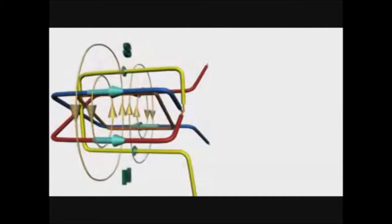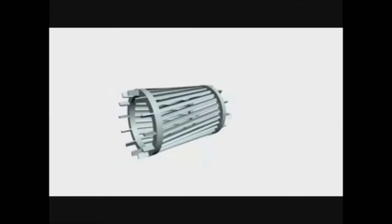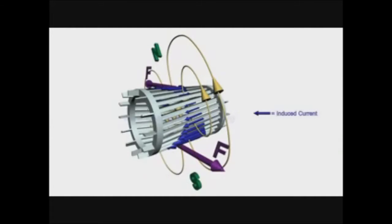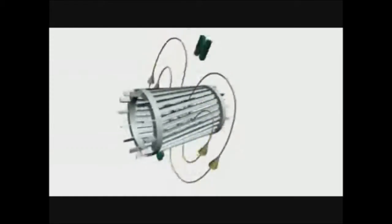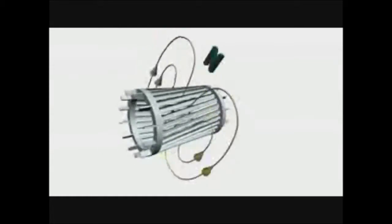A similar phenomenon happens inside an induction motor also. Here, instead of a simple loop, something very similar to a squirrel cage is used. Three-phase AC current passing through stator winding produces a rotating magnetic field. So, as in the previous case, current will be induced in bars of squirrel cage, which is shortened by end rings, and will start rotating. That's why it's called an induction motor. Electricity is inducted in the rotor by magnetic induction rather than direct electric connection.